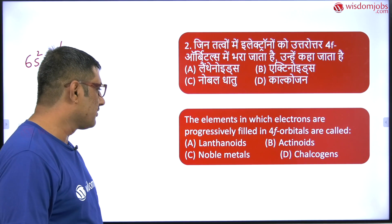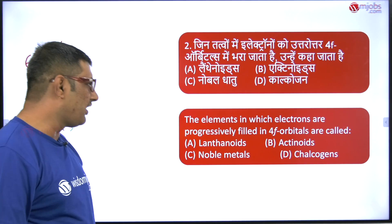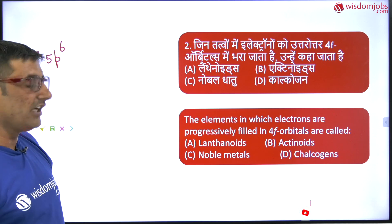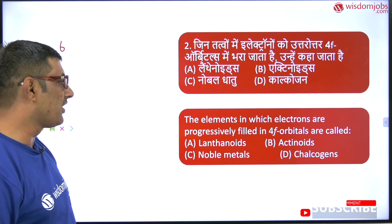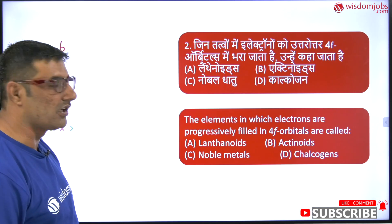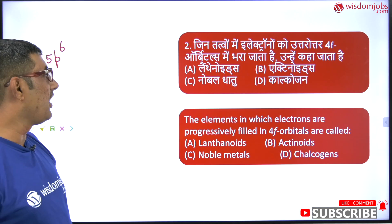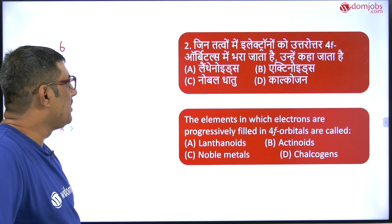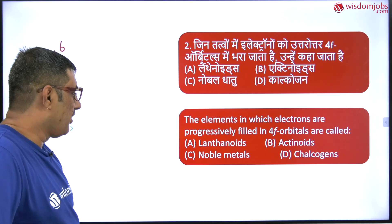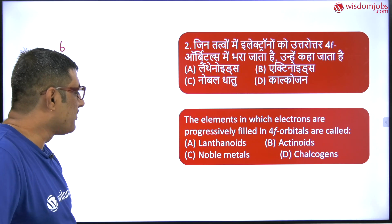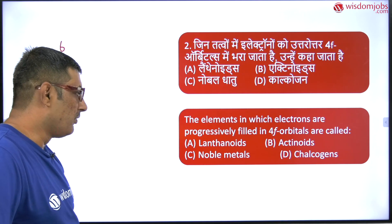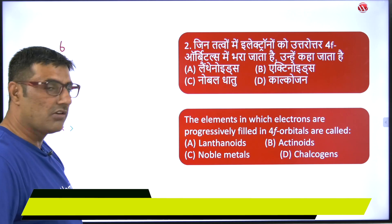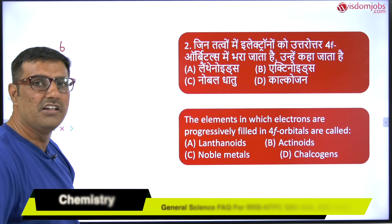The question for this video is: the elements in which the electrons are progressively filled in 4f orbitals are called — option A: lanthanoids, option B: actinoids, option C: noble metals, and option D: chalcogens.